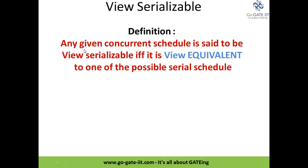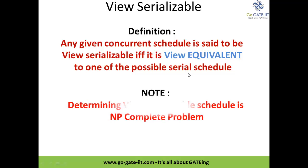View Serializable Schedule — its definition says that any given concurrent schedule is said to be a view serializable schedule if and only if it is view equivalent to one of the possible serial schedules. Determining whether a given schedule is view serializable or not is an NP-complete problem, as you may have heard about in theory of computation.